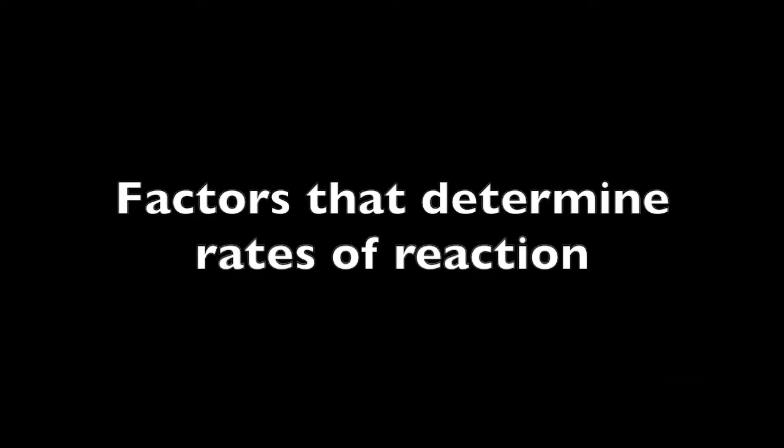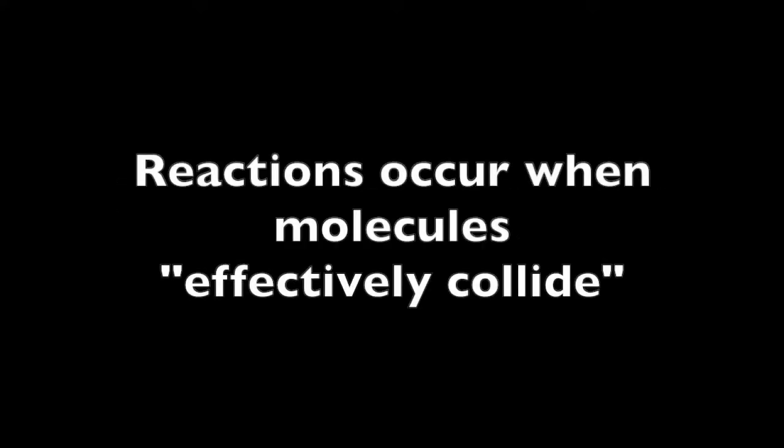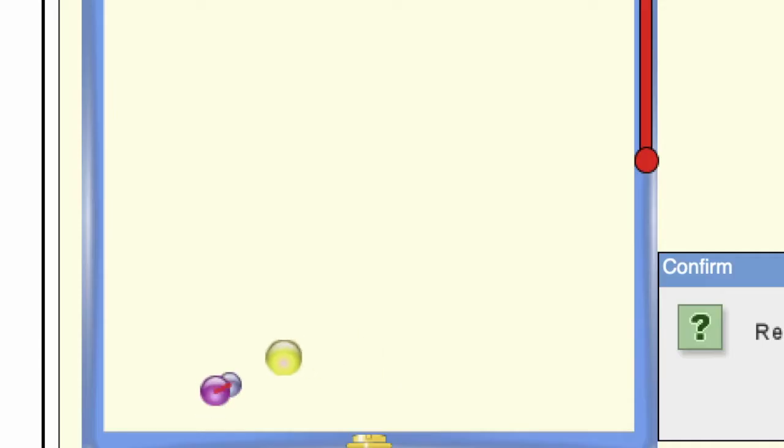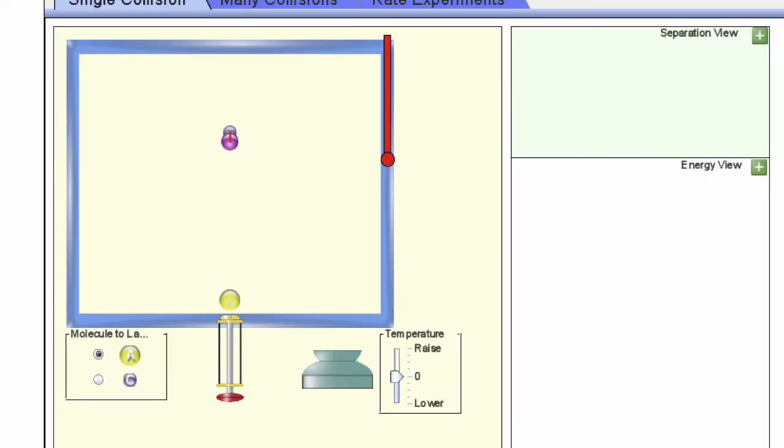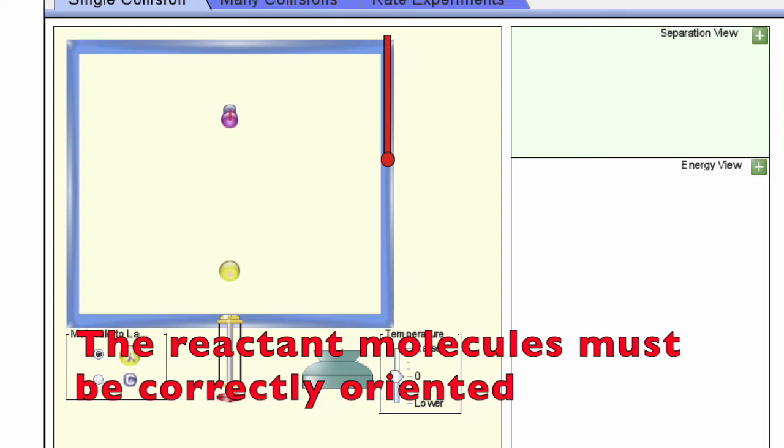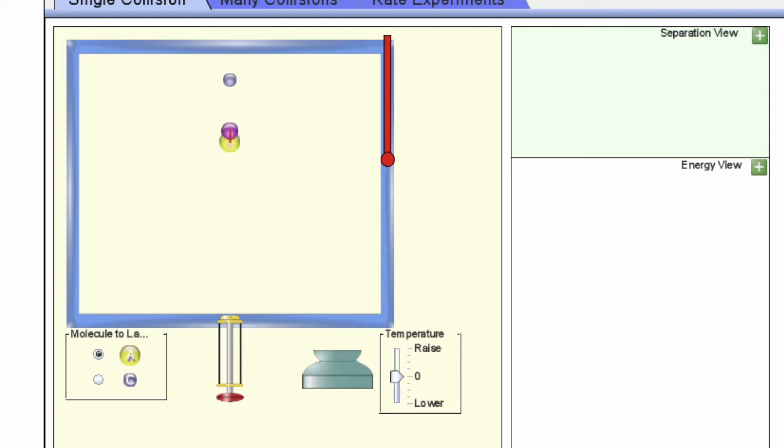Now let's talk about the factors that determine rates of reaction. Reactions occur when molecules effectively collide. An effective collision is a collision that results in a reaction. In order for this to happen, the reactant molecules must be oriented in space correctly to enable the breaking and forming of bonds and the rearrangement of atoms that's needed to form new molecules.